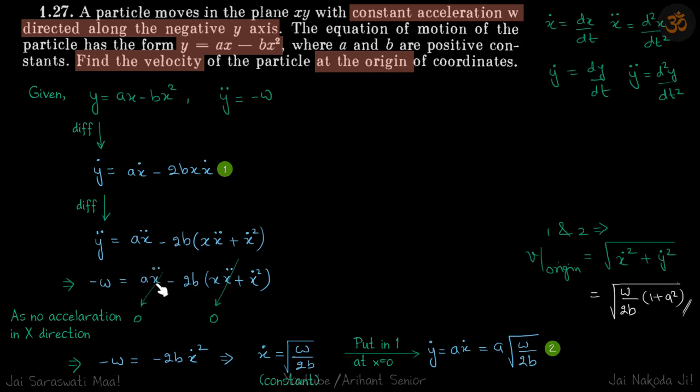You do that and you will get minus w equals minus 2b times x dot squared, or x dot equals root of w by 2b. So velocity in the x direction is constant.